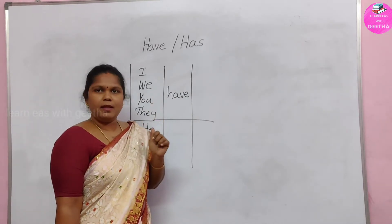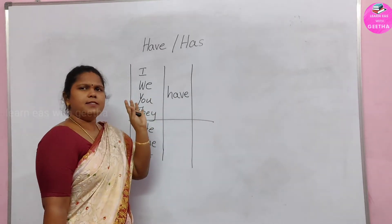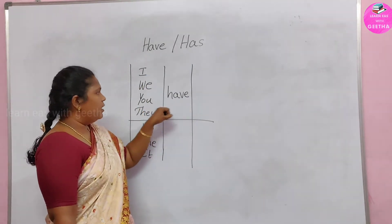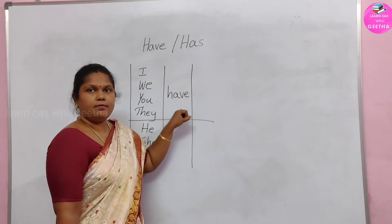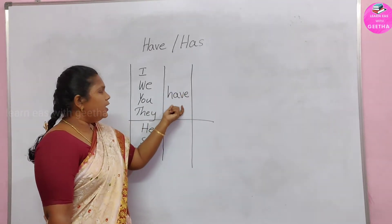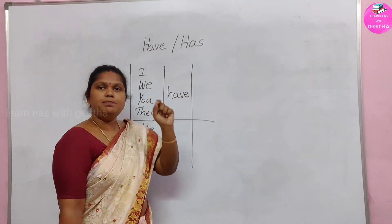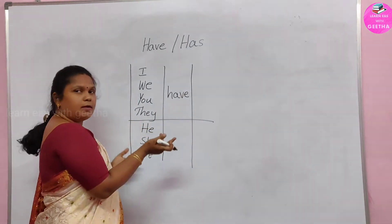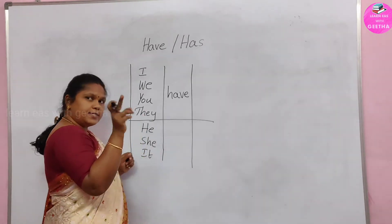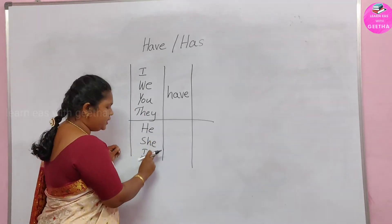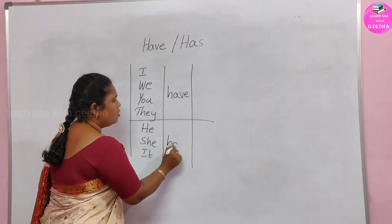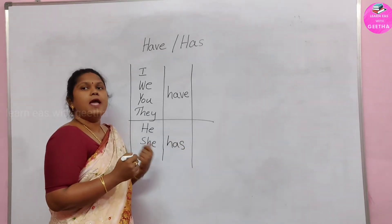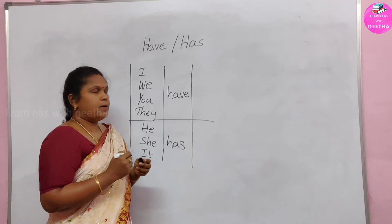That's very simple, isn't it? It's very easy. I have, we have, you have, they have — for these people, we use have. And the other one is has. He, she, it — for these we use has.